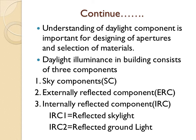Understanding the daylight components is important for designing apertures and selecting materials. There are three major daylighting components: the first is the sky component, the second is the externally reflected component, and the third is the internally reflected component. The internally reflected component is further subdivided into IRC1, called reflected skylight, and IRC2, which is reflected ground light.